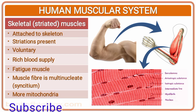Skeletal or striated muscles are attached to the skeleton. Striations or cross-walls are present between one cell and another. They are voluntary and under our conscious control. They have a rich blood supply — blood vessels are present in them. Fatigue occurs as they can accumulate lactic acid during hard exercise. Muscle fibers are multinucleate, and more mitochondria are present. As you work hard on them, they become larger in size.